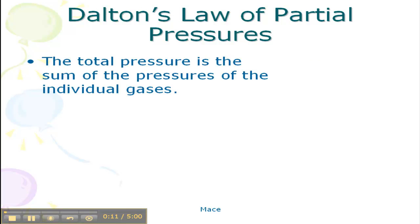So Dalton's Law of Partial Pressures tells us that the total pressure of a mixture of gases is the sum of the pressure of the individual gases. So the formula looks like this. Ptot is your total pressure.